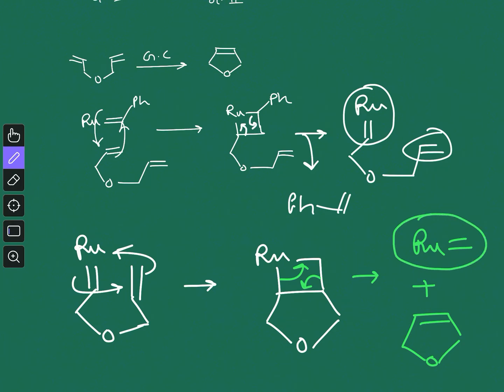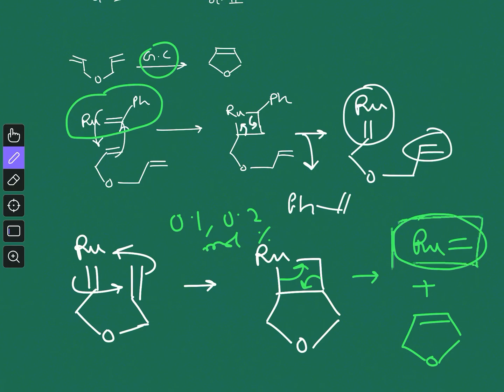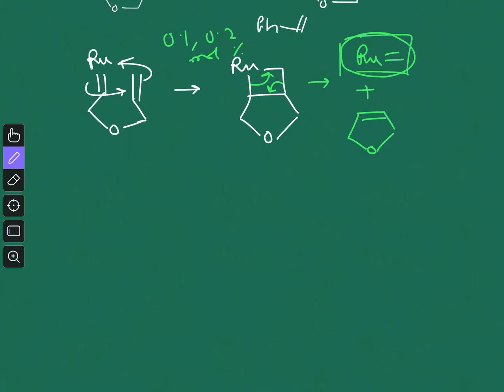At this point the metal carbene is regenerated, and it continues the catalytic cycle — the reaction goes on as a cycle. You need the Grubbs catalyst in only a catalytic amount, like 0.1 or 0.2 mol percent, which is sufficient for the reaction. After this step, the reactive catalyst is the ruthenium complex with the simple carbene.